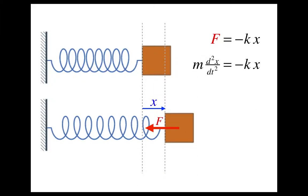Instead of calling acceleration a, I'm going to write it as the second derivative of position, d squared x by dt squared. When I rearrange the equation, I get d squared x by dt squared is equal to negative k over m times x.